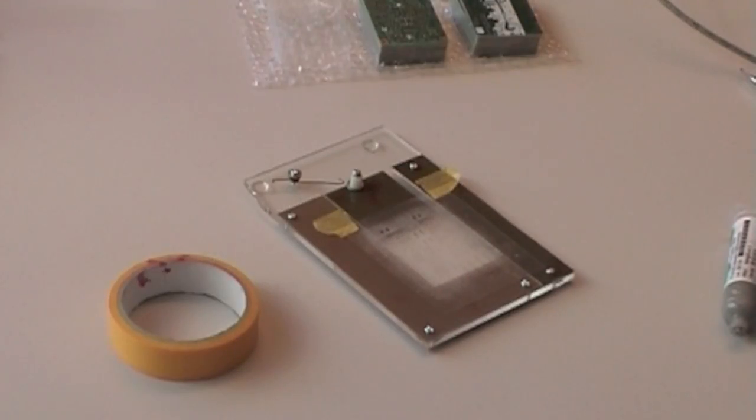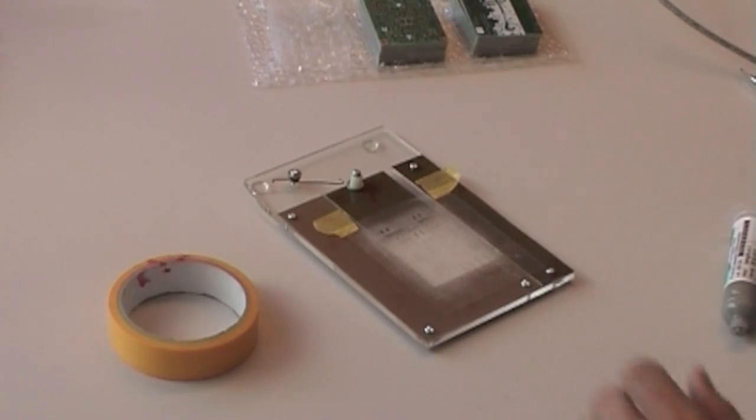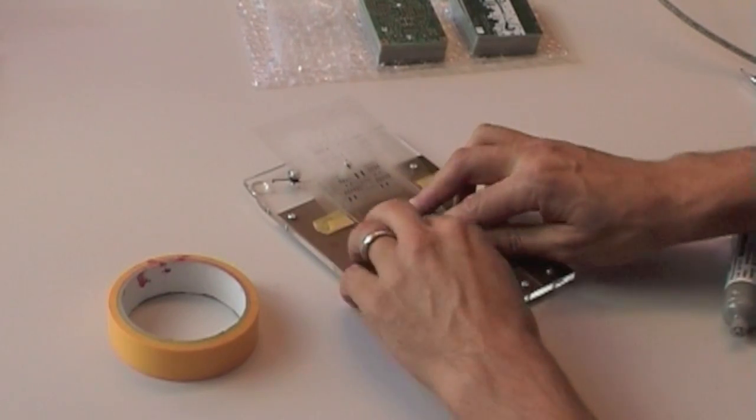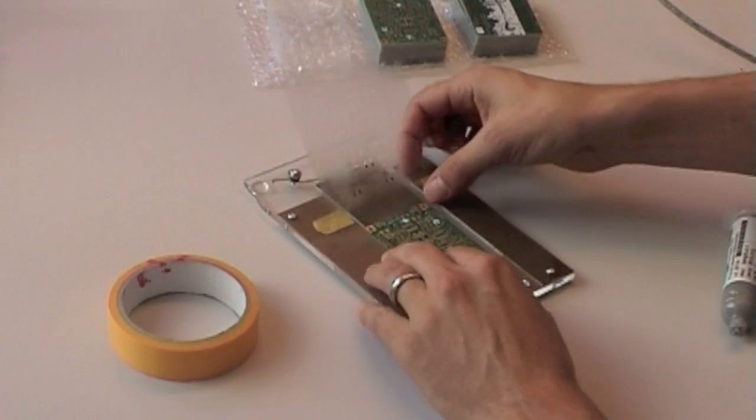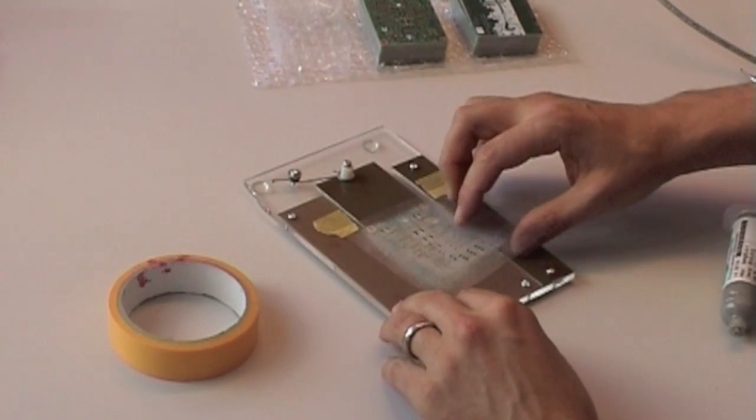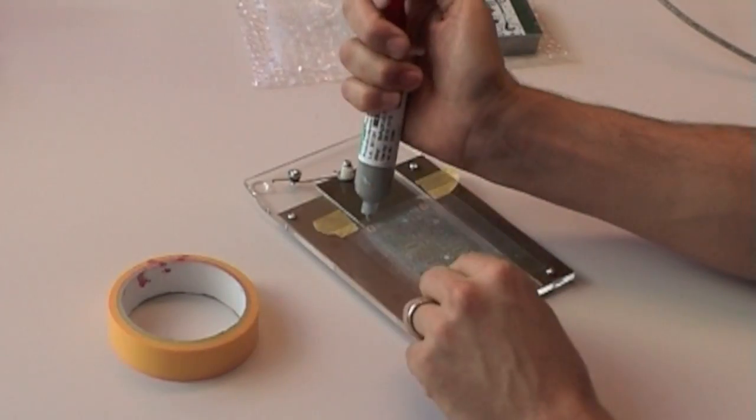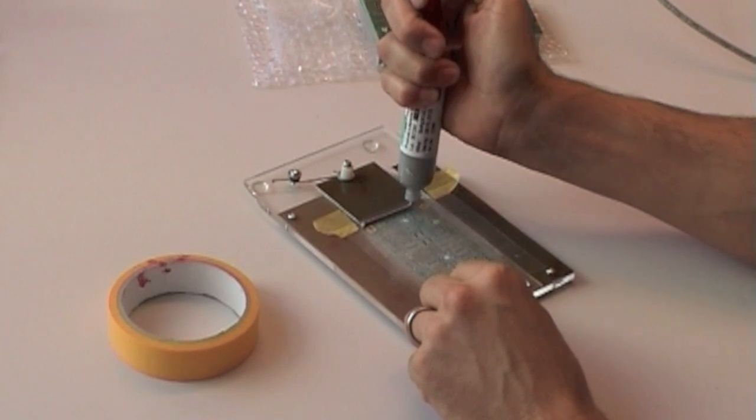The first step is to apply solder paste by screen printing. For this I built this little device where you can put the circuit board. There is a laser cut stencil and with this I can apply solder paste.